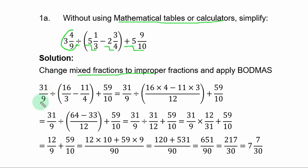If you convert the first fraction, you have 31 over 9. That is 9 times 3, 27 plus 4, 31 over 9. If you convert the fractions inside, you have 16 over 3 minus 11 over 4.